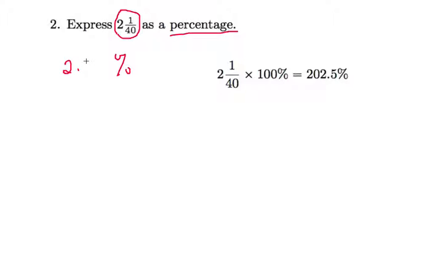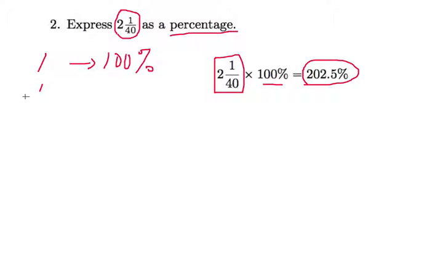You take 2 and 1 over 40 times 100. This is done so that you should get - because one whole is 100%, we always take one with one percent, and then therefore 1 over 40 is 100 divided by 40. 100 divided by 40 will give us 2.5.